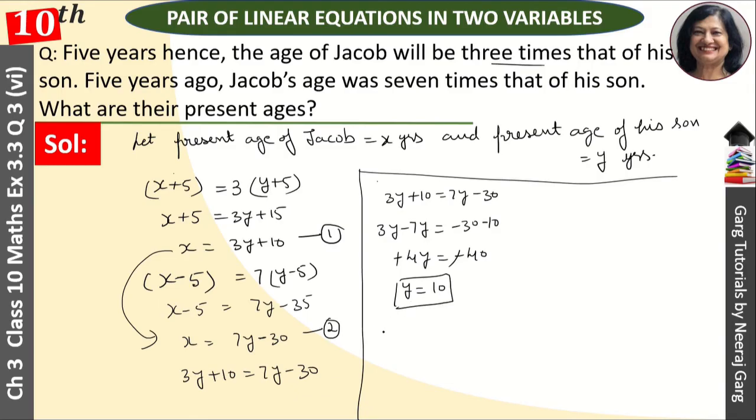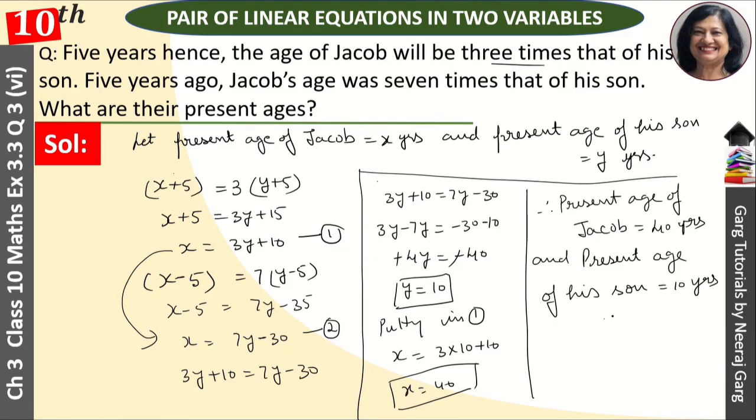So we'll put the value of y in equation one. Putting in one, right? So x is equal to what? Three into ten plus ten. So x is equal to 40. Therefore, present age of Jacob is equal to 40 years and present age of his son is equal to 10 years. This is our answer.